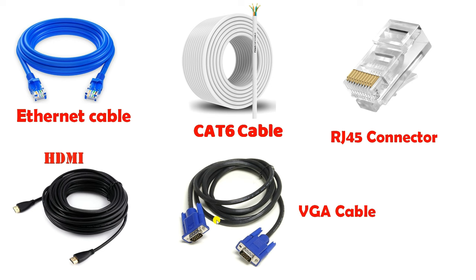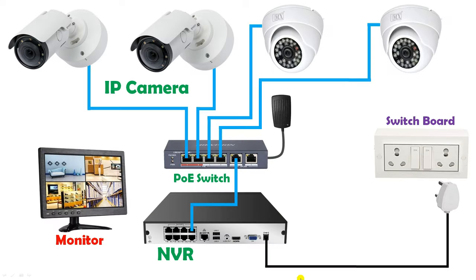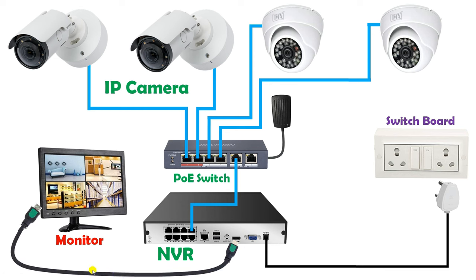After selection of cable, do the connection. Connect one end of the HDMI or VGA cable to the corresponding port on the NVR and the other end at the back side of the monitor. After this much connection you can watch recordings on your monitor. For now I used a VGA cable and completed the connection.